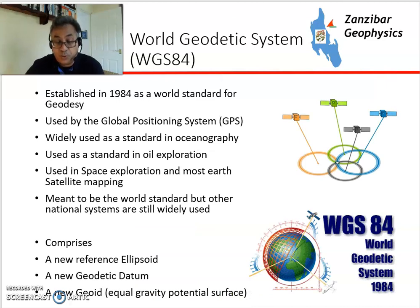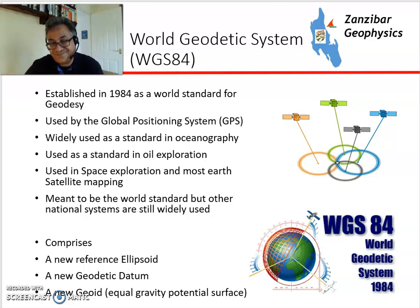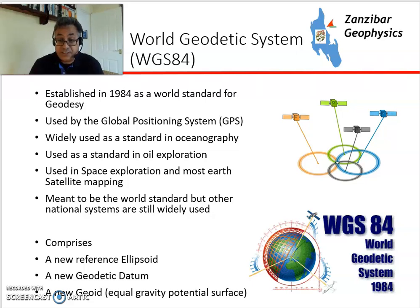WGS84 was created in 1984, as the name says, and is used by the Global Positioning System as a world standard. It's used in oceanography and is becoming a standard in international exploration, although there are compromises with local standards discussed in part 1. It's also used for space exploration and satellite mapping. It uses a new reference ellipsoid, new geodetic data — covered in parts 2 and 3 — and a new geoid, an equal gravity potential surface.